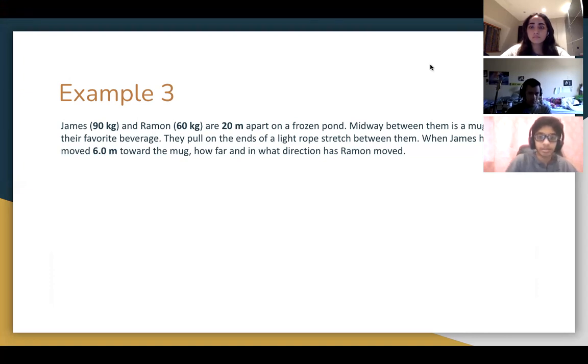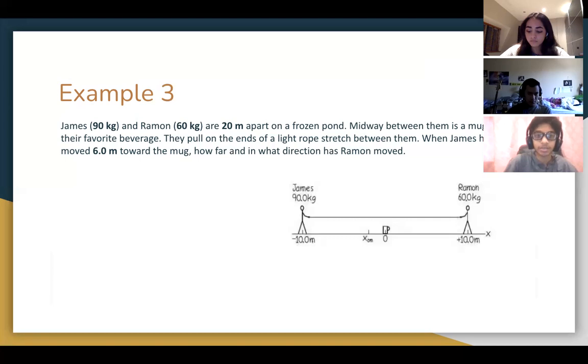So this is an example of the center of mass of a system. As you can see in this diagram, the center of mass is not going to be perfectly in the middle because James and Ramon are not the same mass. James has three halves as much mass as Ramon, so the center of mass is shifted towards him. So with this knowledge, we can then compute the center of mass.